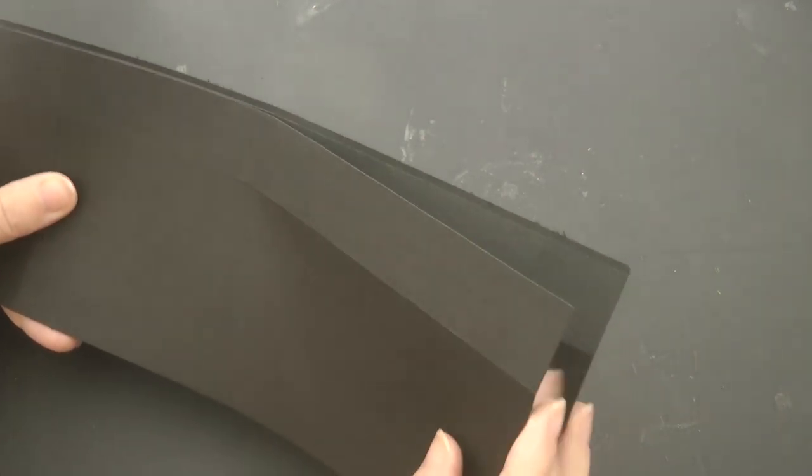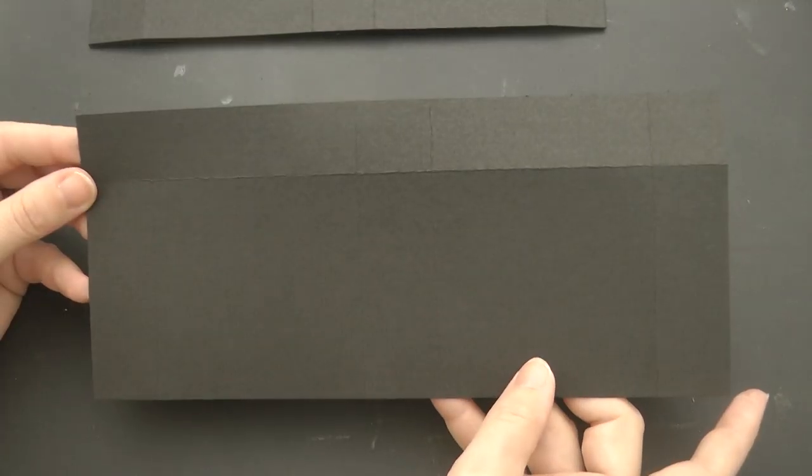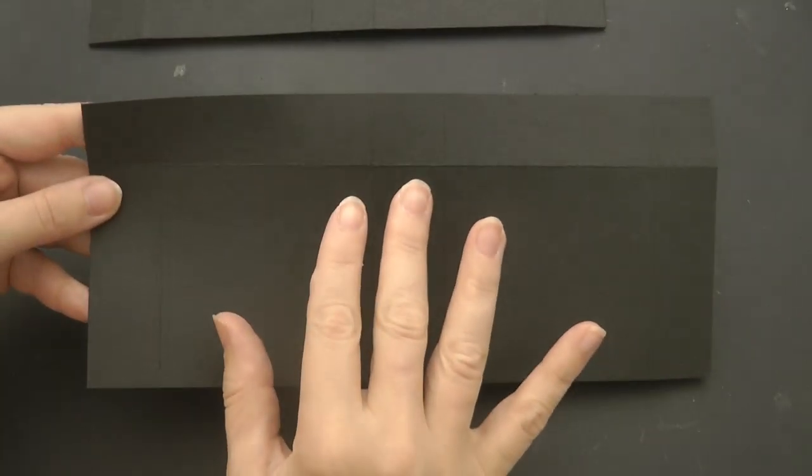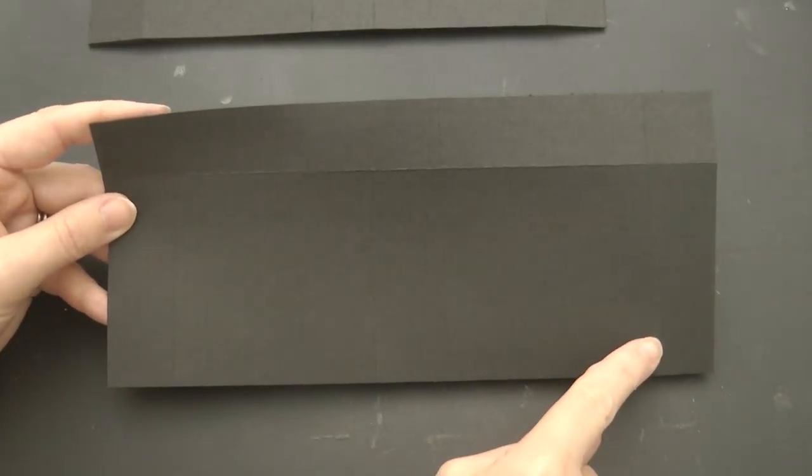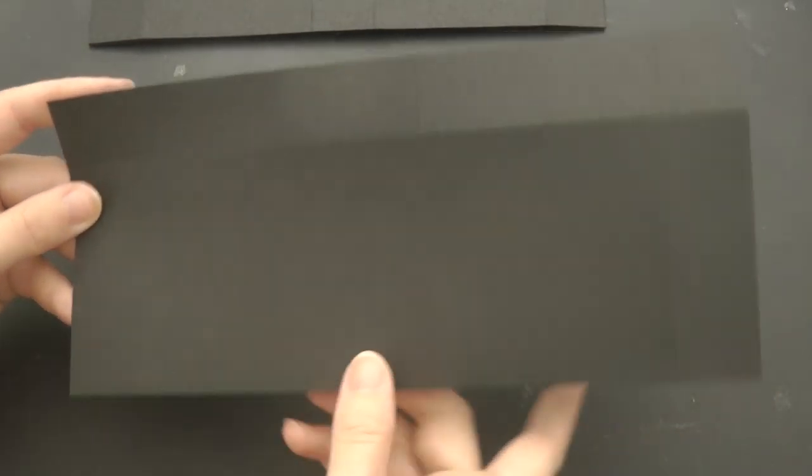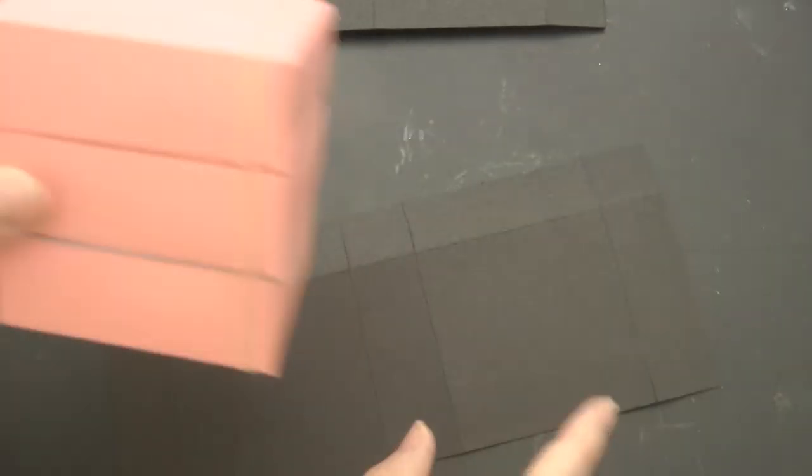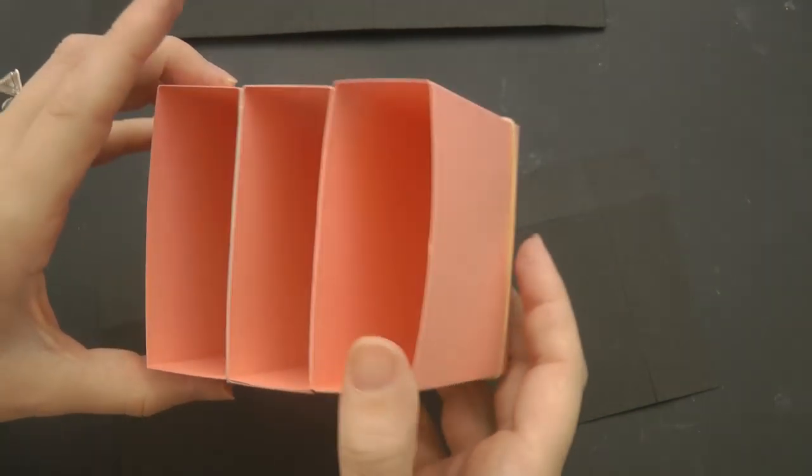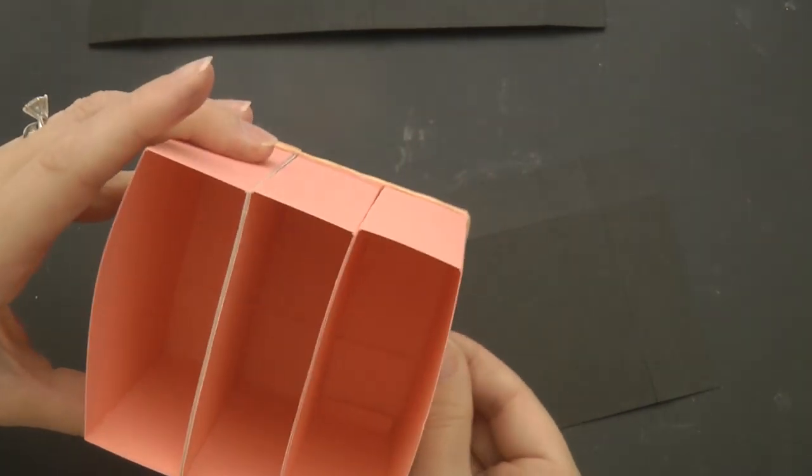What you're going to need for this project, this will make the outside casing for the drawers. You need six sheets of paper with the dimension of 9 inches by 4 inches. Each of these will make one of these sections that makes up the outside of the set of drawers.